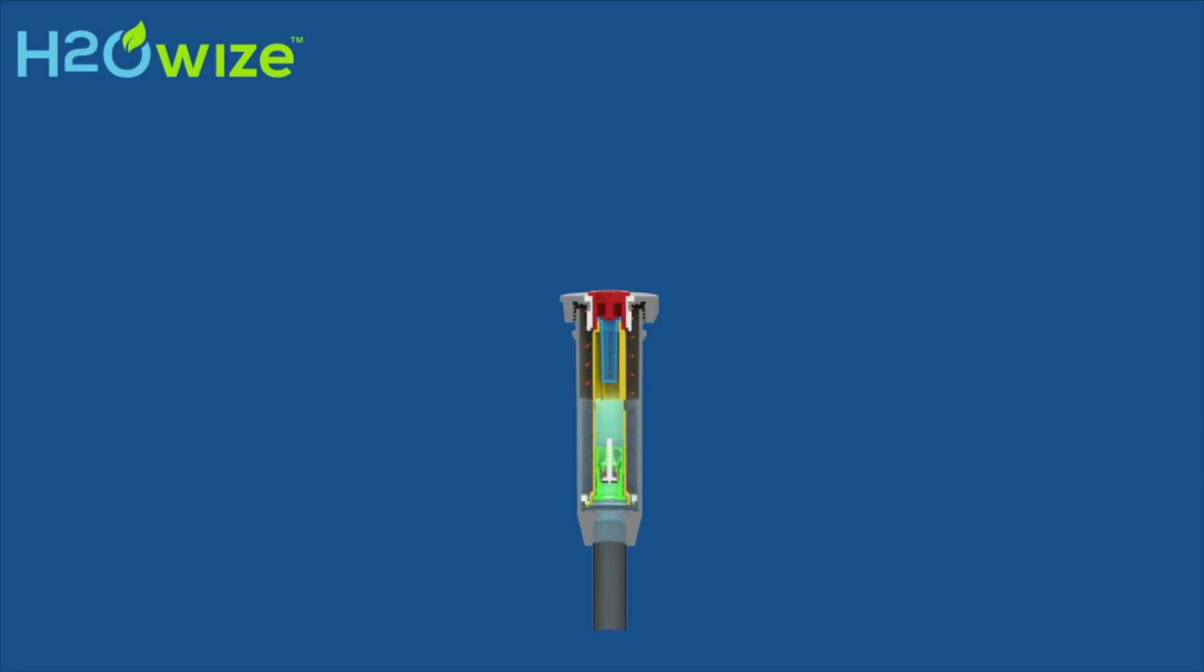Per state regulations, all spray bodies now sold in California, Washington, Colorado, Hawaii, and Vermont must come with pressure regulation effective October 2020.